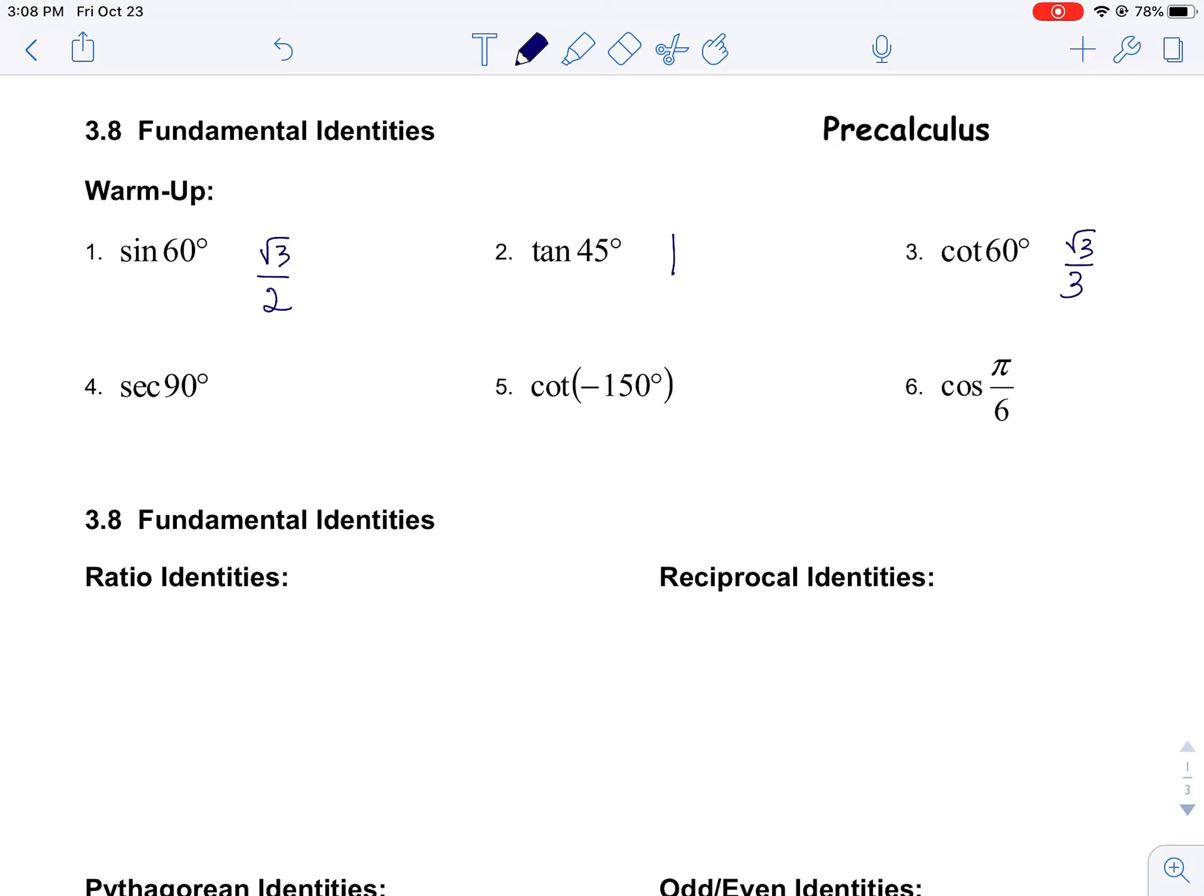At 90 degrees, the secant is the reciprocal of the x-coordinate, 0. One over 0 would be undefined.